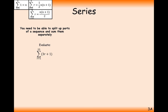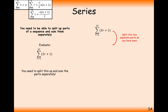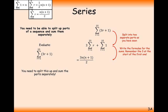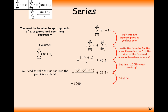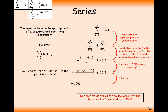Evaluating the series from 1 to 25 of 3r plus 1: first split it up into two separate series. It's 3 times the summation of r plus 1 times the summation of 1s. We know the formula for the series of r and the formula for the series of 1s. Substituting n as 25 and working through gives 1,000 as your final answer. So if you sum the first 25 terms of the substitution of 3r plus 1, you get 1,000.